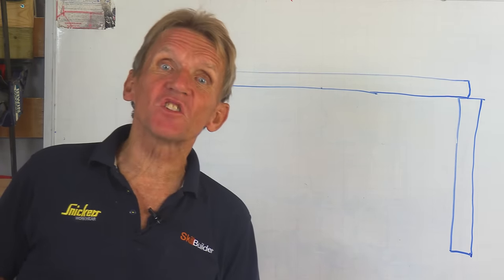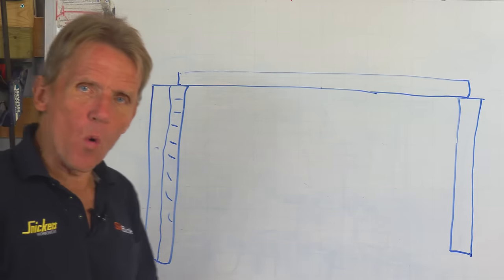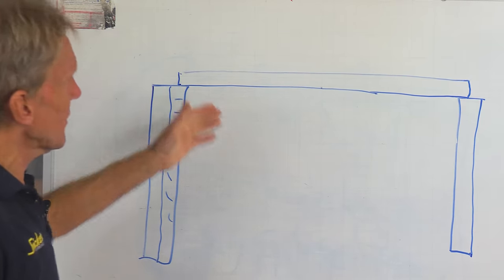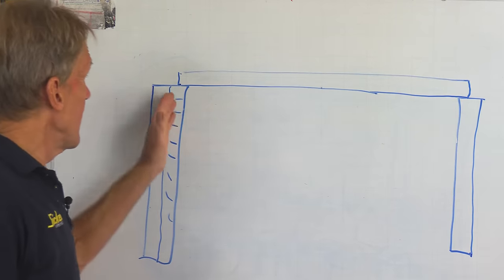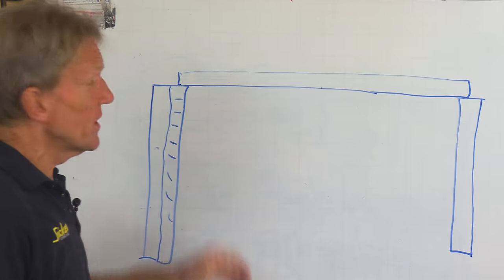So they put a beam on and the beam goes all the way across and it sits on the two walls there on what we call the bearing. Now the bearing should be a minimum of 75 millimeters, but for various reasons that doesn't always happen.